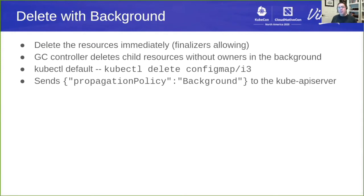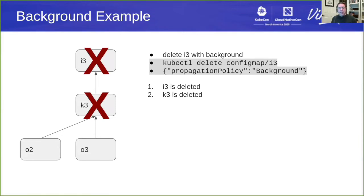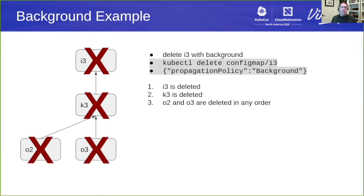The mechanics of actual deletion. There is an option to delete in the background — this is the default case. It means resources are removed immediately, assuming you have no finalizers, and the garbage collection controller finds child resources that have no additional owners in the background and deletes them. This is what happens when you run 'kubectl delete' on a particular config map. In this example, we're going to delete i3 — it's immediately removed from the API. The garbage collection controller notices and then deletes k3 because it no longer has a valid owner reference. Then it notices o2 and o3 have no owner references and deletes them in any order.